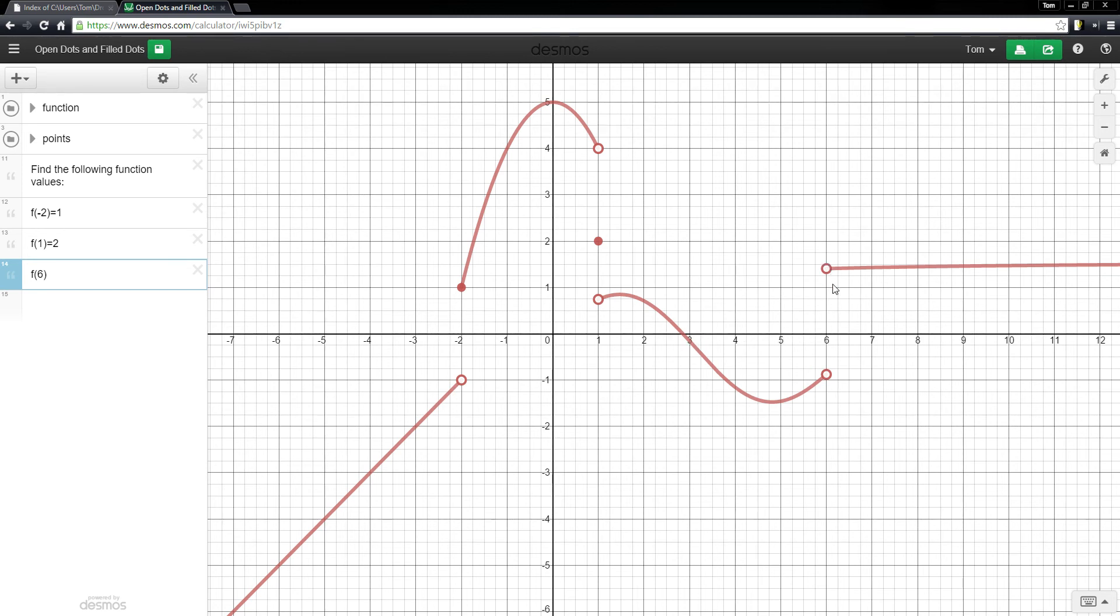Okay, and over here, I can only see open dots at 6. If I wanted to know what f of 6 is, all I can see are open dots. There's no filled dot anywhere in here. And so, based on the information I have, there is no point on the graph at 6. It's not here because there's an open dot, and it's not here because there's an open dot, and I can't see any others. So, what you can say in that case is just that f of 6 does not exist.